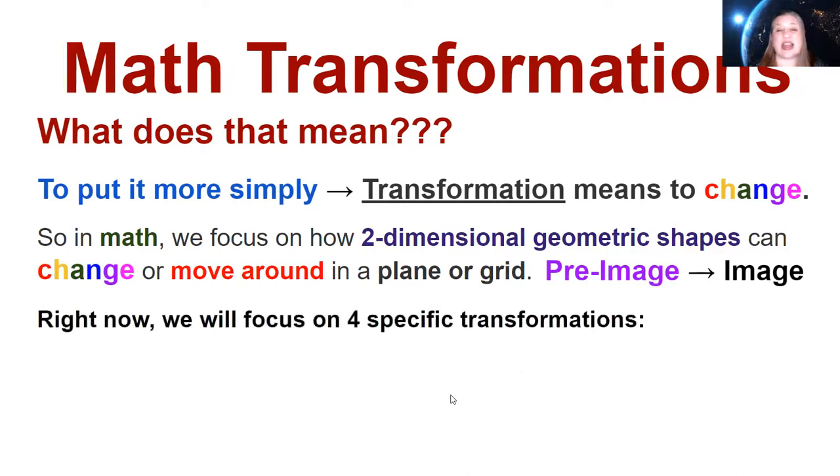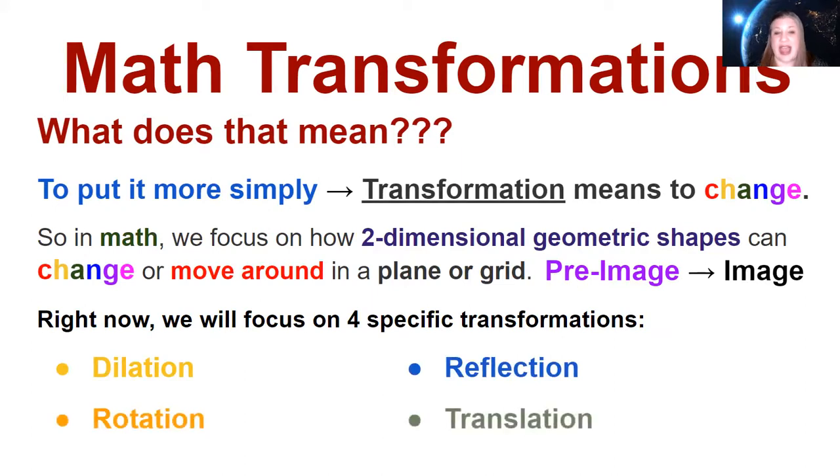All right there's a lot of different ways that you can change two-dimensional geometric shapes but right now we're going to focus on four specific transformations and those are dilation, reflection, rotation, and translation.